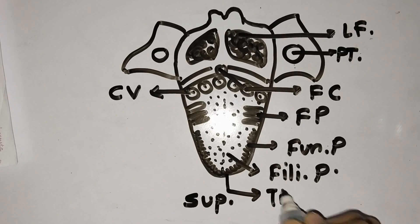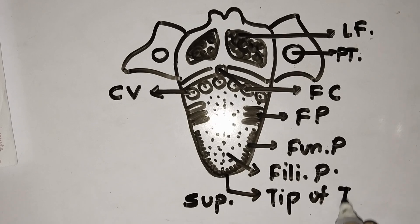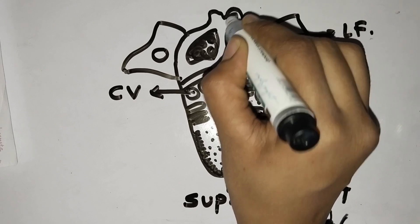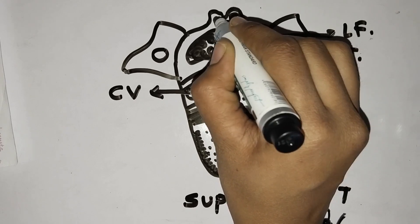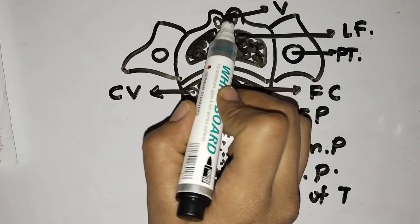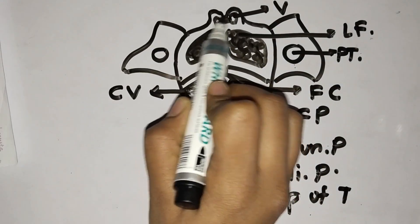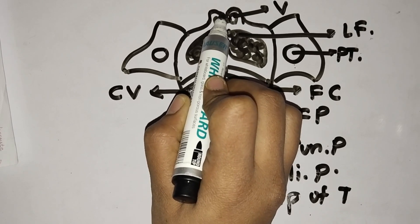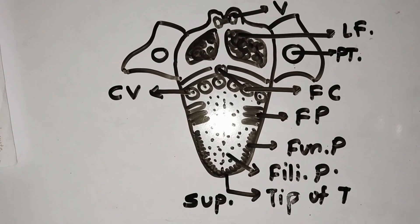This will be marked as the tip of the tongue. These are the small holes — this hole will be the vallecula. Now these will be the lateral glossoepiglottic fold. And this will be the median glossoepiglottic fold. This is the superior surface of the tongue.